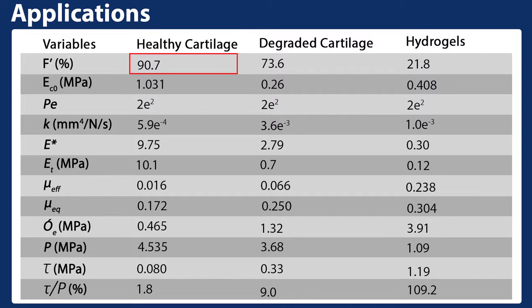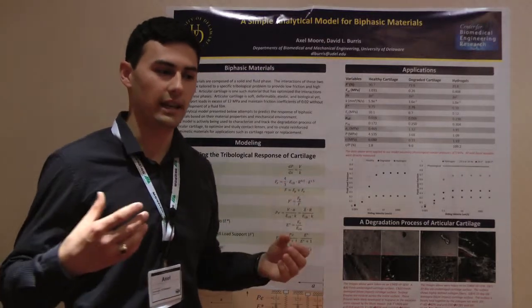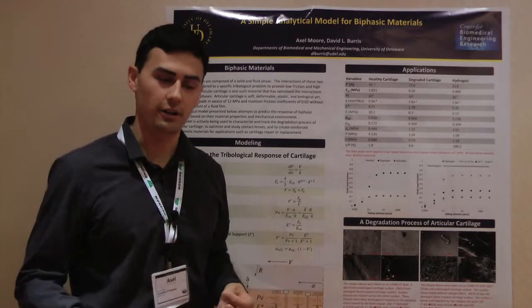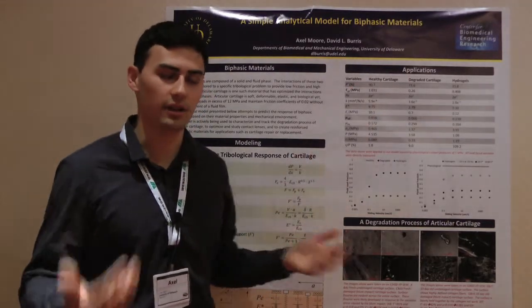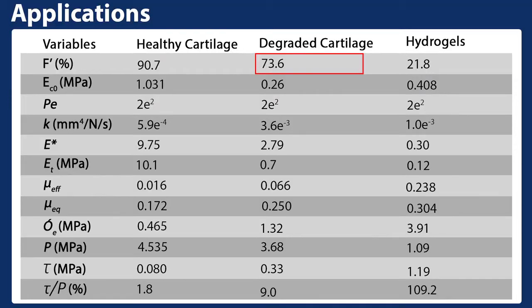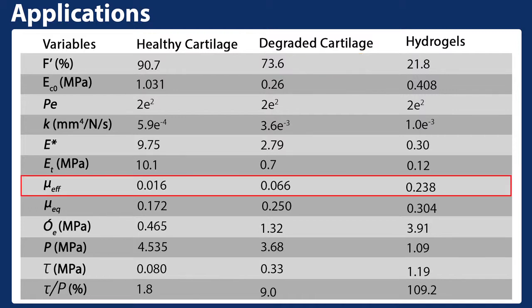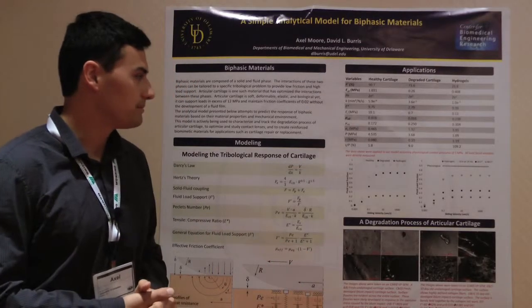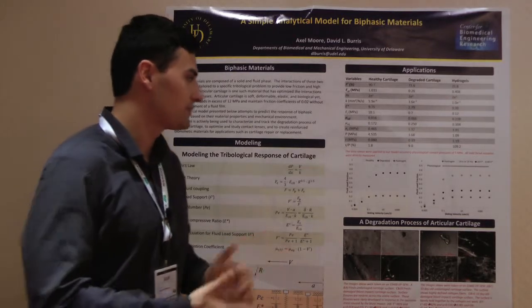Healthy cartilage has a fluid load support of 90.7%, meaning 90% of your load is supported by fluid pressure and only 10% by the elastic matrix. If you consider only solid-on-solid interactions as causing friction, that means just 10% solid-on-solid contact. In degraded cartilage, the fluid load support drops to 73.6%, giving substantially greater solid-on-solid interaction and increased friction. This is reflected in direct measurements: friction coefficient in healthy cartilage is about 0.016, versus about 0.066 in degraded cartilage — a few factors higher.